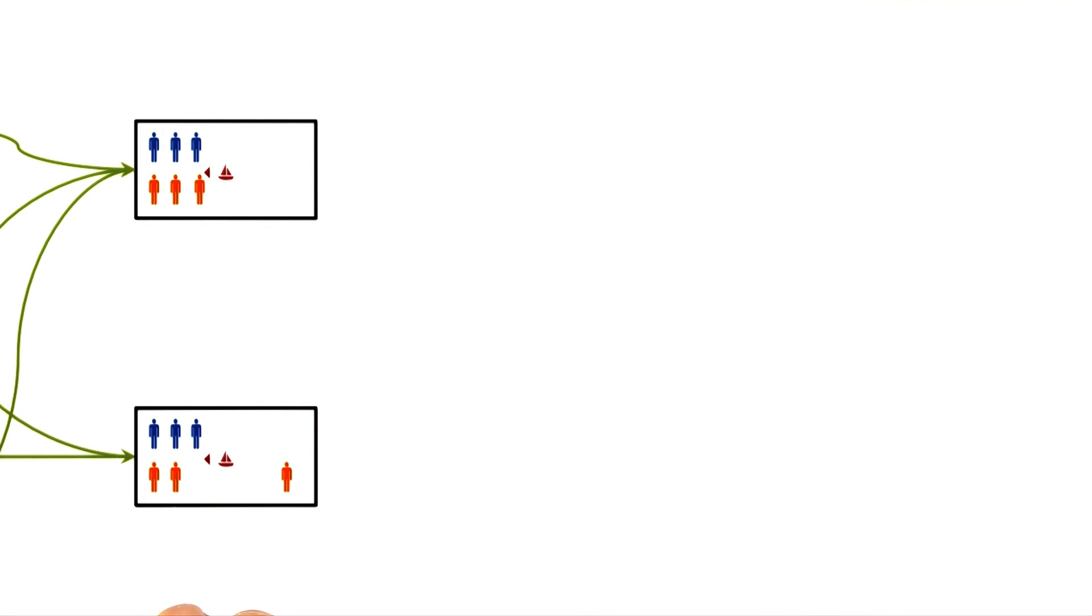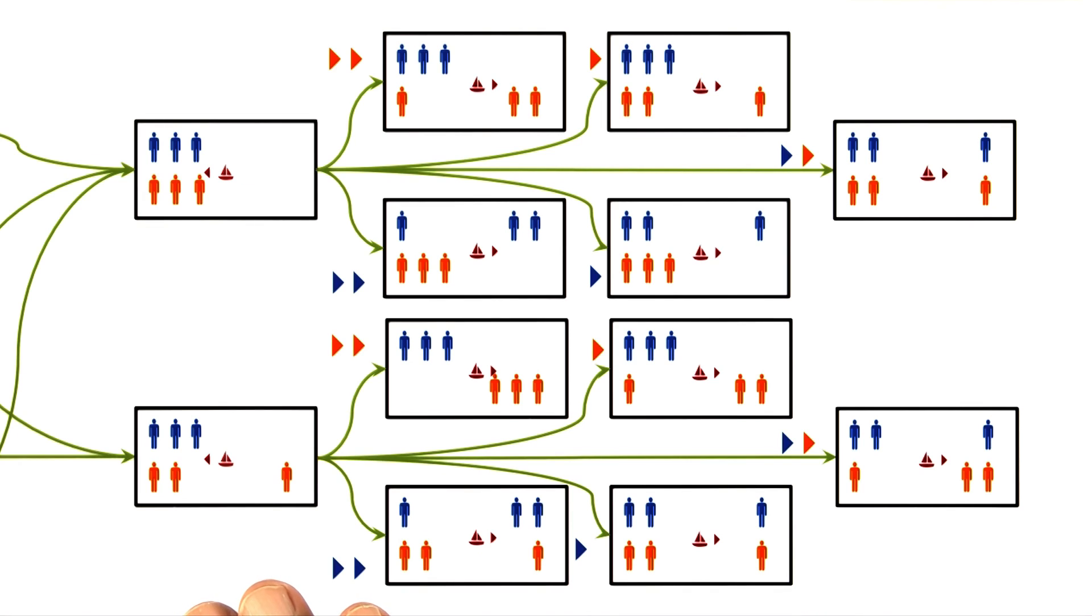Now we can continue to apply this method of generate and test iteratively. So we can apply it on this state, and that state, and see what successor states we get. If we do so, then we get a very large number of successor states.